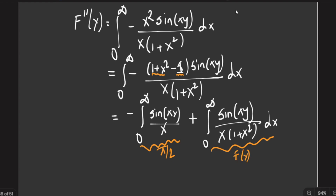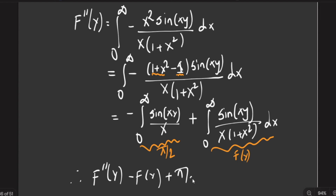Taking everything to the left-hand side, we conclude that f''(y) − f(y) + π/2 = 0, and therefore we have obtained a differential equation to solve.